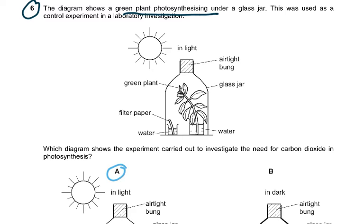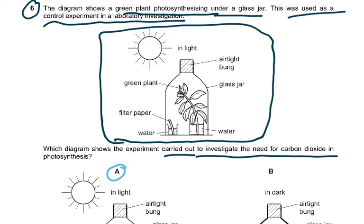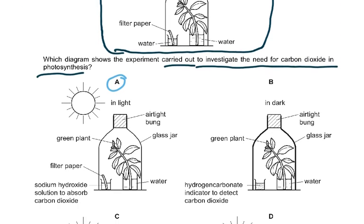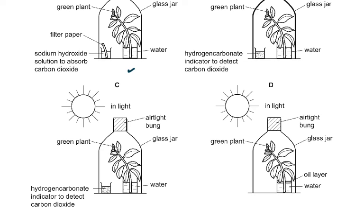Question 6: The diagram shows a green plant photosynthesizing under a glass jar. This was used as a control experiment. Which diagram shows the experiment carried out to investigate the need for carbon dioxide in photosynthesis? In the experiment they would have to absorb the carbon dioxide, and that is why the answer was A. It was of course in the light.